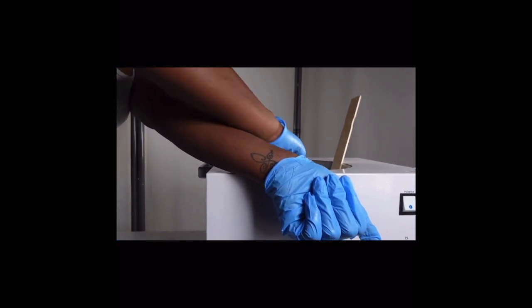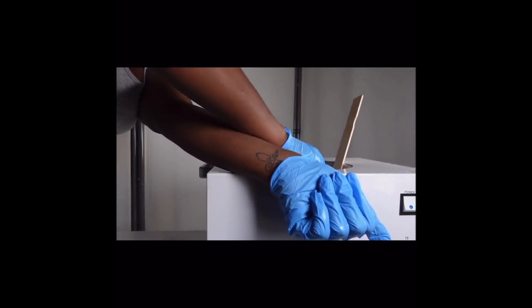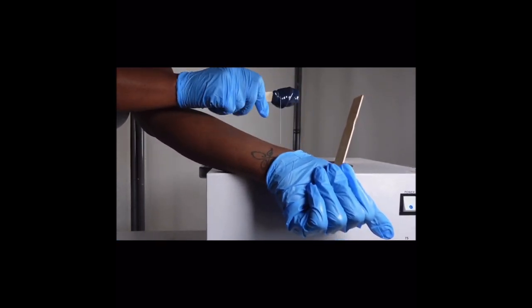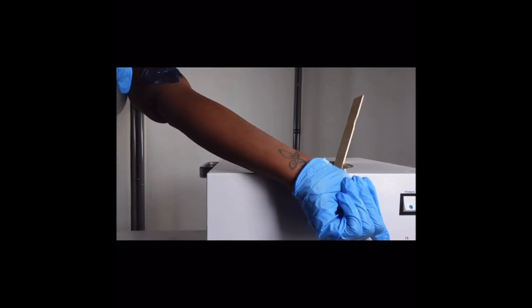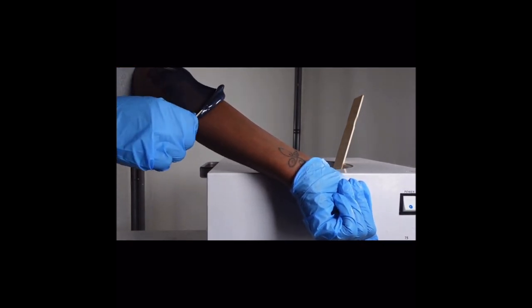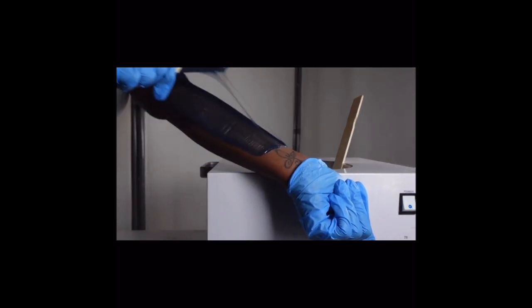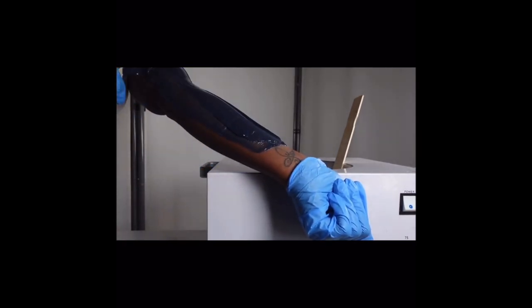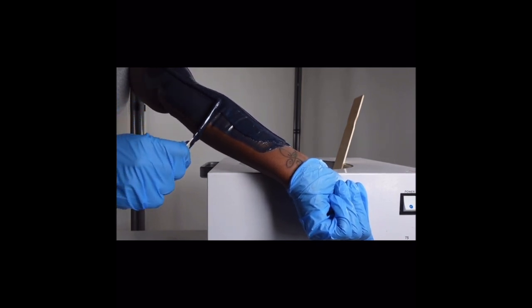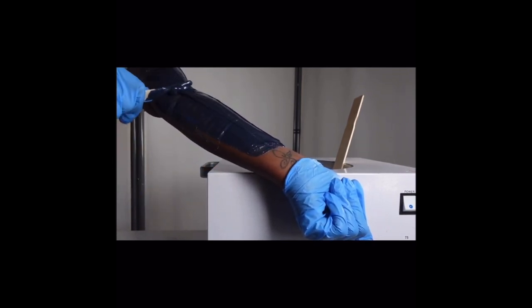When applying larger areas like a leg or an arm or a back, this is the amount of wax you want on your stick. You want to be able to pick up a really big comb and spread it nice and evenly. This is how you ensure to get your wax strips longer and thicker.